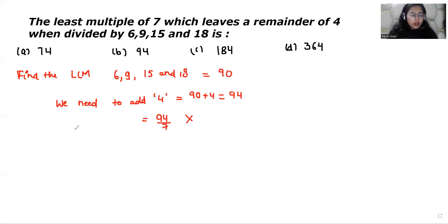Now check the next multiple. Next multiple is 180. Again, we need to add 4. So if we add 4, 180 plus 4 is 184. And if we divide it by 7, again it's not completely divided.